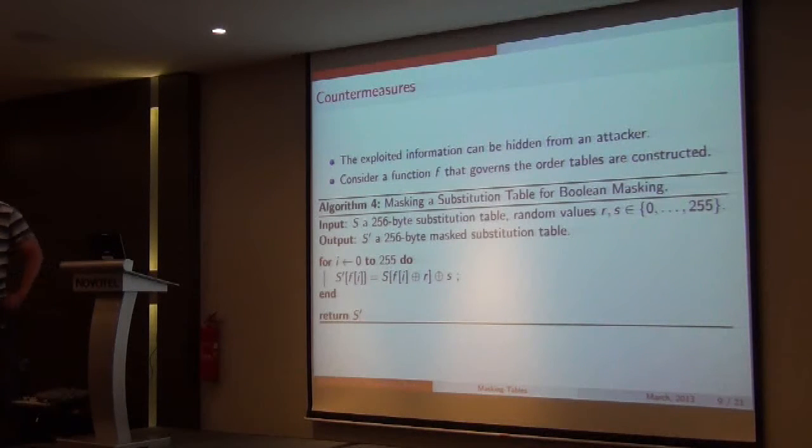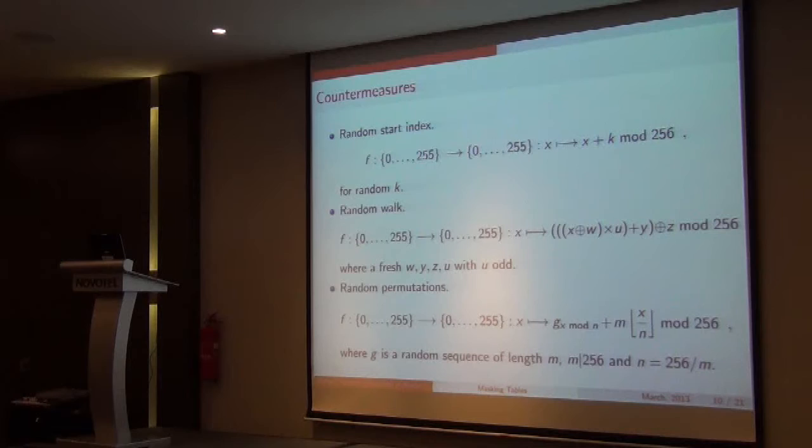So countermeasures, what could you do? The intuitive thing to do would be propose some function F that controls the route that it takes from 0 to 255, so the attacker can't form a hypothesis on the index, which is harder than you would imagine. We propose three different things. You have a random start index. So when you generate your table, you choose a random value K, add that to each index and generate your table like this. Or a random walk where you have some function where you compute lots of operations, so the table is generated in some random order, governed by lots of random values. Or a random permutation, a proper random permutation that you use repeatedly.